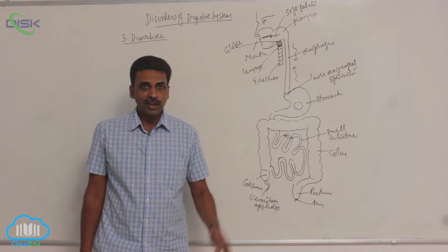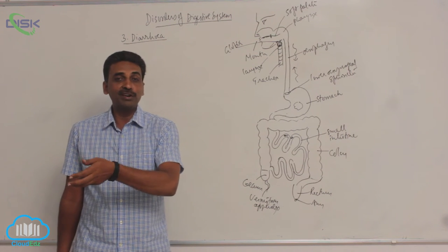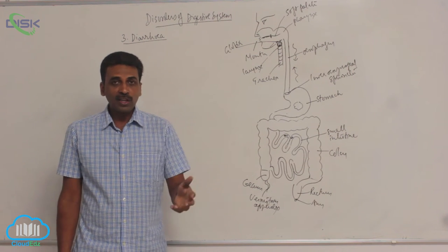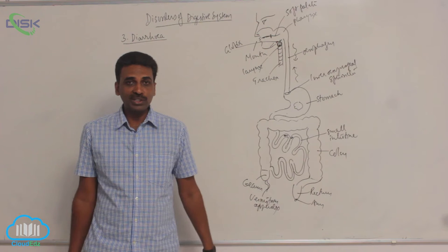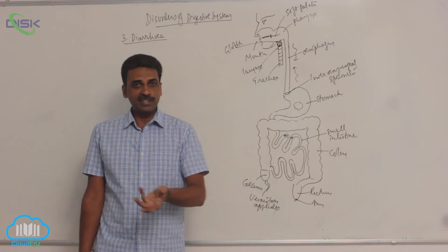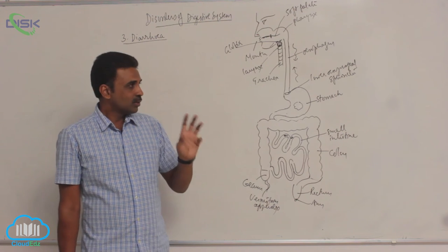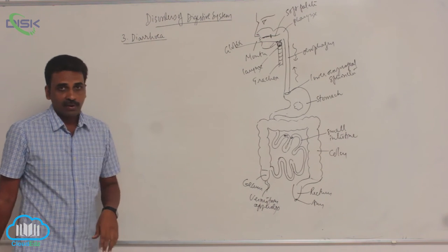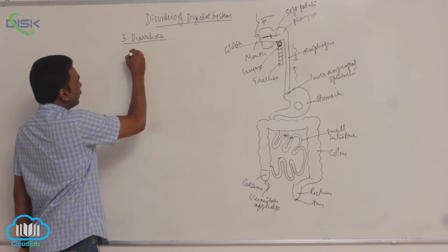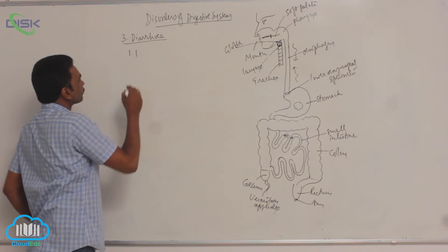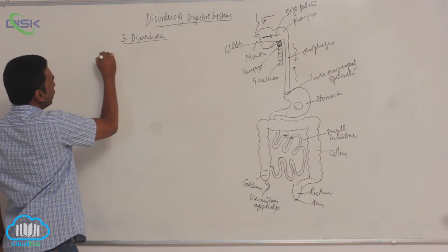Acute means it is there for a short period of time, then it's gone. Chronic means it is there for a very long duration in diseased condition. For example, if HIV is there, you can see chronic diarrhea. Now, causes of diarrhea include diet.